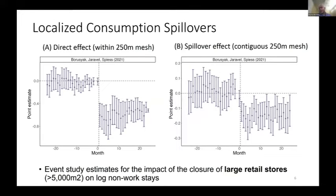We have two applications in the paper. The first looks at distinct place-based interventions or events that affect the attractiveness of a location. Specifically, we examine the closure of large retail stores in Tokyo — those greater than 5,000 square meters — and also the relocation of Tokyo's fish market from one part of the city to another. We use an event study approach, tracking the number of stays in a 250-meter mesh grid where one of these large retail store closures occurs, and also in a contiguous but non-containing 250-meter mesh grid close to the closure.